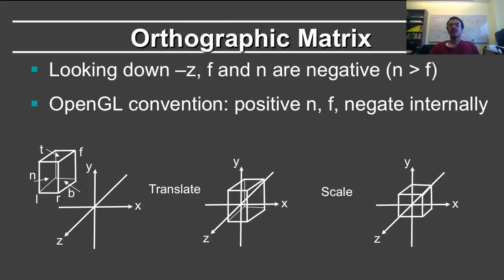There is one final change that needs to be done to get the GL ortho formula, which is that in OpenGL, the convention is that you're looking down the minus z axis. Therefore, N and F are both negative numbers. N is closer than F, and it's a smaller negative number than F. However, when you specify the arguments, you specify N and F as positive values. Therefore, in the formulae, you have to replace N by minus N and F by minus F, which all it does is it changes one sign to negative.